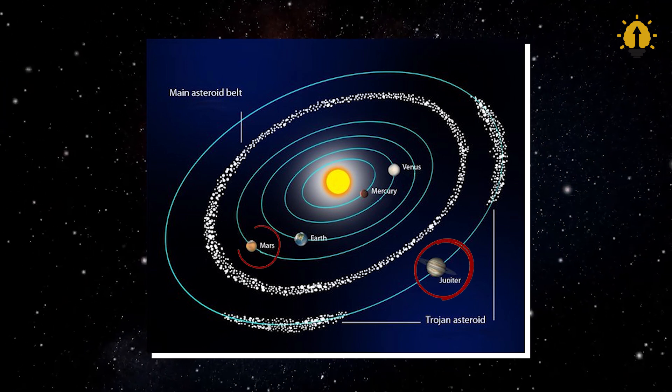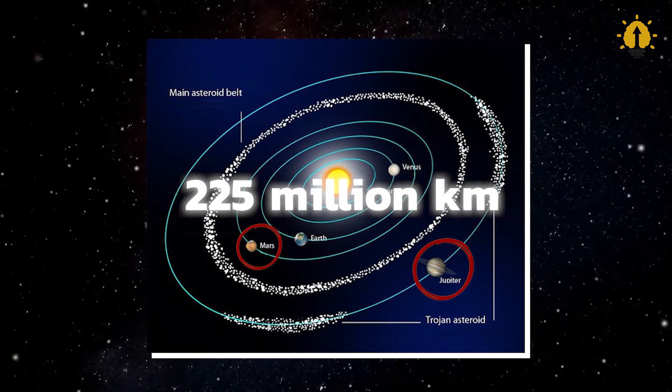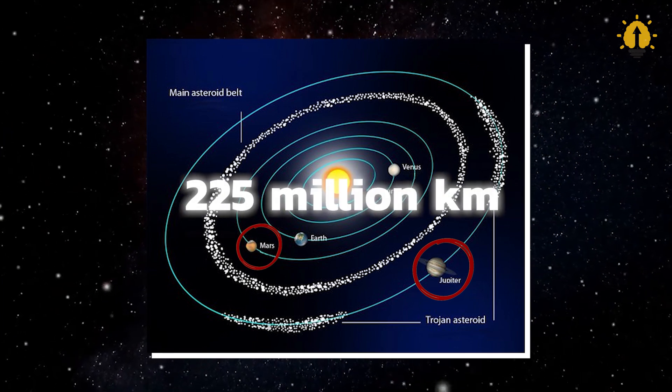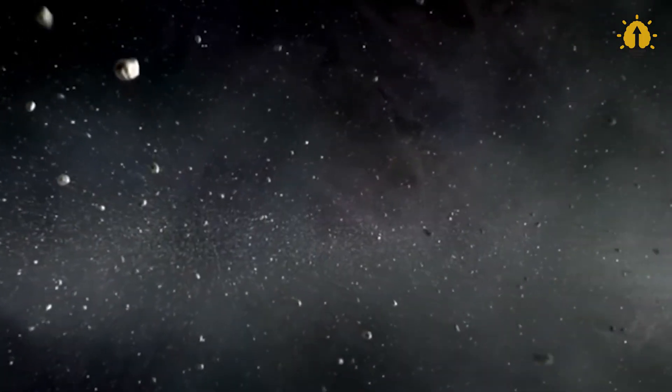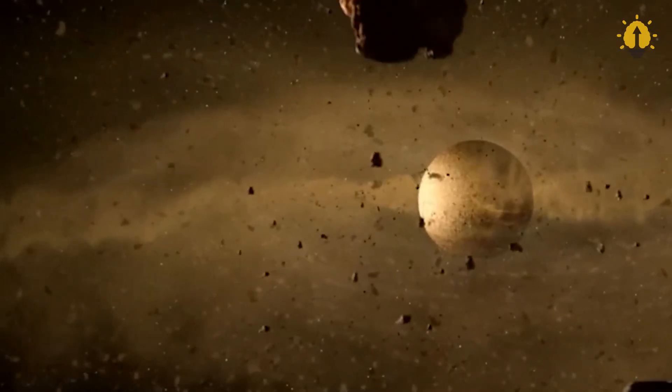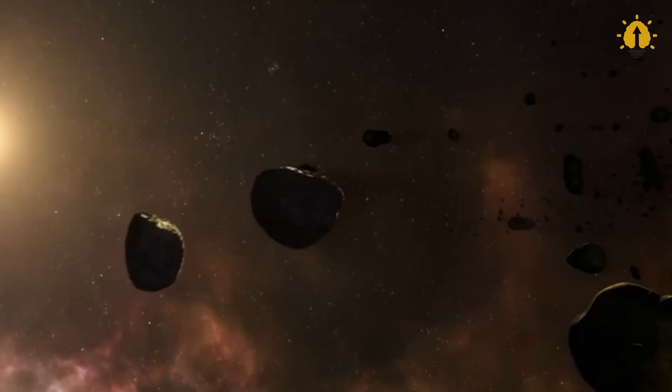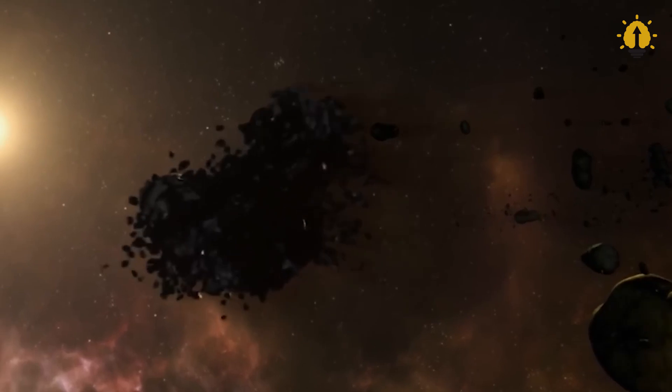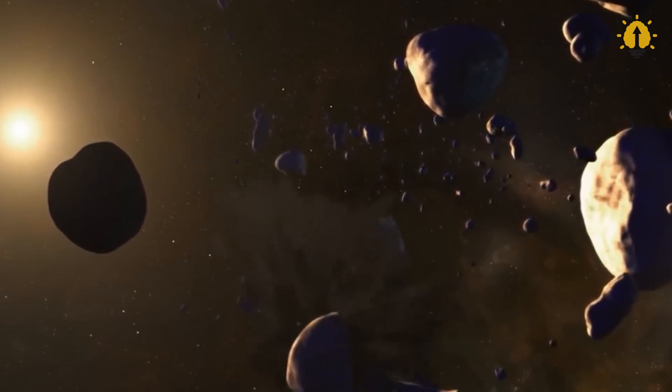This asteroid belt, sandwiched between Mars and Jupiter, it's a whopping 225 million kilometers, 140 million miles, wide. That's like one and a half times the distance from us to the sun. So, these space rocks are spread out millions of kilometers apart. It's pretty much mission impossible for a spacecraft to bump into one.